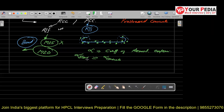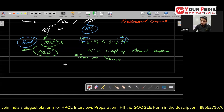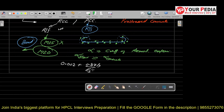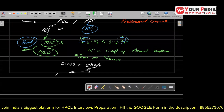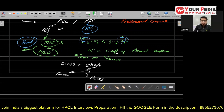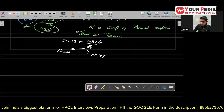What is the minimum strain in steel? The minimum strain in steel should be 0.002 plus 0.87 Fy upon Es, where Es is the modulus of elasticity of steel. The Es value for any grade of steel — whether Fe 500 or Fe 415 — is taken as 2 × 10^5 MPa.